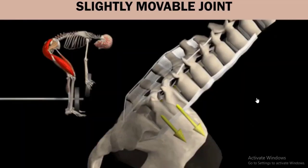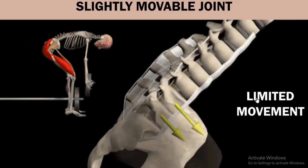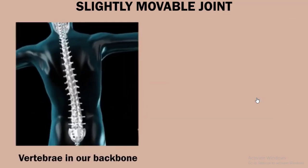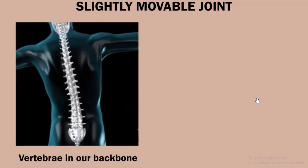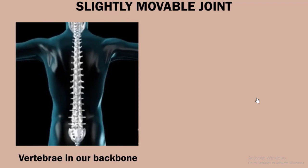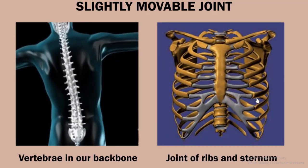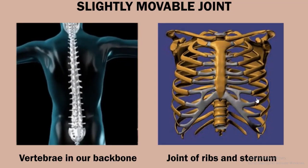Slightly movable joints are joints that allow limited movement — like the joints between the vertebrae of the backbone, which allow movement in a limited direction. The joints of the ribs and sternum allow movement forward or backward during inhalation and exhalation.